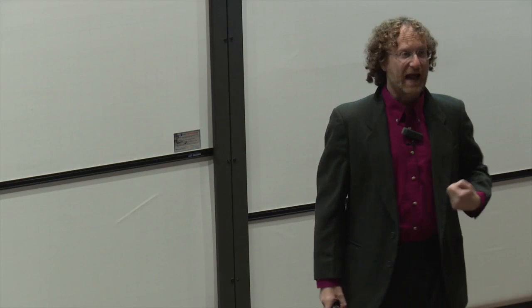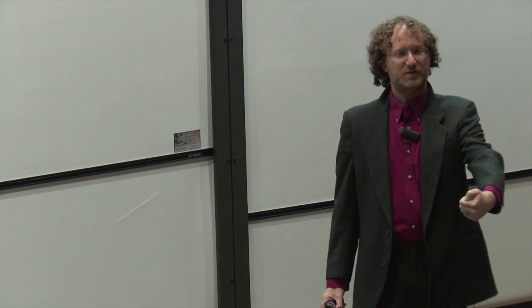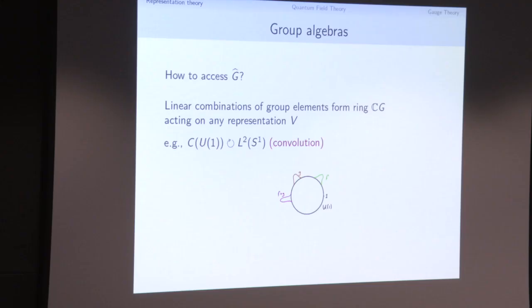To access G-hat, we use the group algebra. If I have a group acting on a representation, I get more operators than just group elements: I can take linear combinations, or smeared continuous linear combinations of group elements. These are called group algebras. In the case of the circle, we can look at continuous functions on the circle. They act on all L² functions on the circle through the convolution product — a bump here and a bump there multiply together to a bump at the sum of positions.